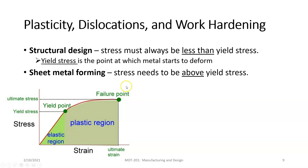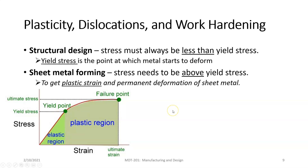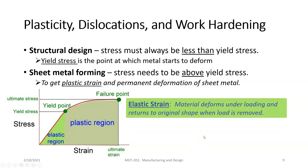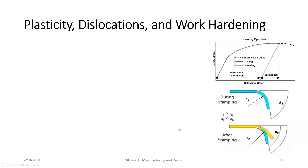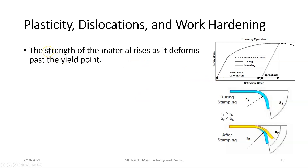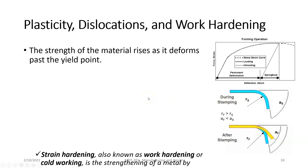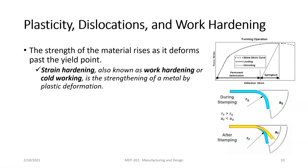Sheet metal forming is obviously done above the yield point — you wouldn't be making anything if you never go past the yield stress, because it would bend and come back. You have to go beyond that point to bend things and make them stay — that's what gives you plastic strain. During the sheet metal bending operation, the strength of the material rises as it deforms past the yield point, so the metal actually gets stronger and starts to resist the bending. This is strain hardening, also known as work hardening or cold working.